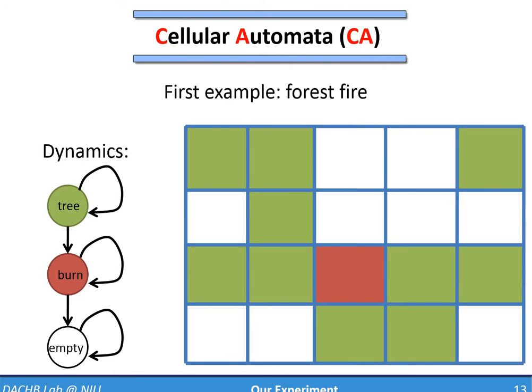A CA doesn't normally show you cute icons changing because it gets hard to track that. The visualization shows the values as colors. Here, a green cell says it's got a tree, a red cell says it's burning, a white cell says it's empty. So that grid shows you the same initial configuration we've looked at before. One tree around the center is burning. The dynamics are shown on the left. They tell you what can happen to a cell from one time step to the other.